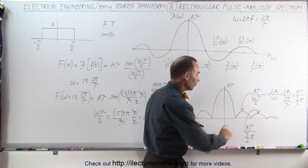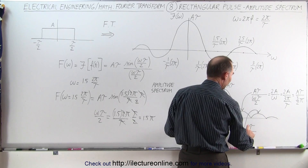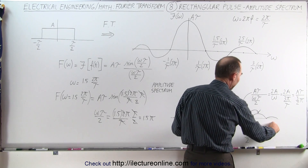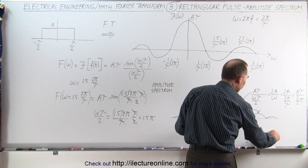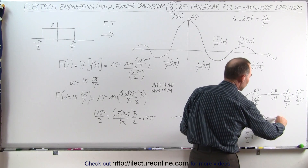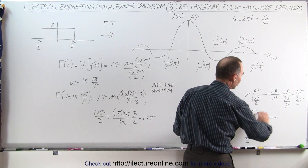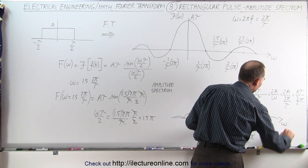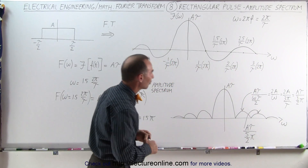The amplitude for the next lobe is A times tau divided by 5 over 2 times pi, and the next one is A times tau divided by 7 over 2 times pi, and so forth. You can see that the amplitude keeps diminishing as you go farther out along the frequency axis.